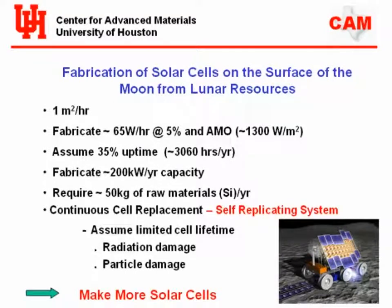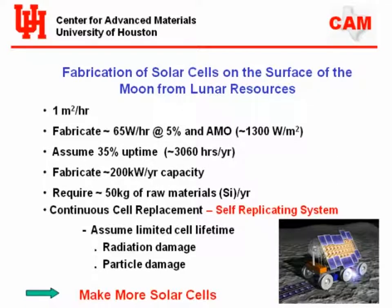The cell paver moves about one meter squared per hour, fabricating about 65 watts per hour equivalent at 5% efficiency cells. Assuming 35% uptime — because of the day-night cycle on the Moon — we can do about 200 kilowatts per year with one crawler. This is continuous cell replacement. If cells are damaged by radiation, particle impacts, or micrometeorites — unlike cells brought from Earth, which once damaged are gone — we simply go and make more.